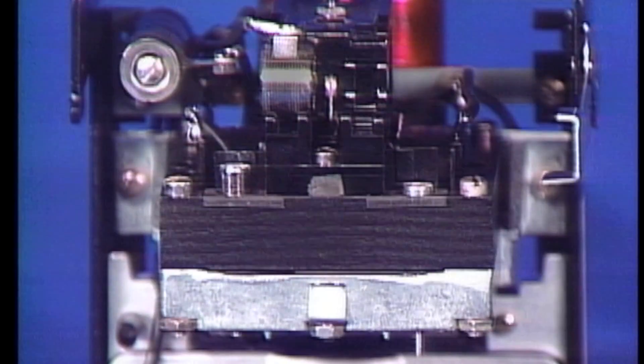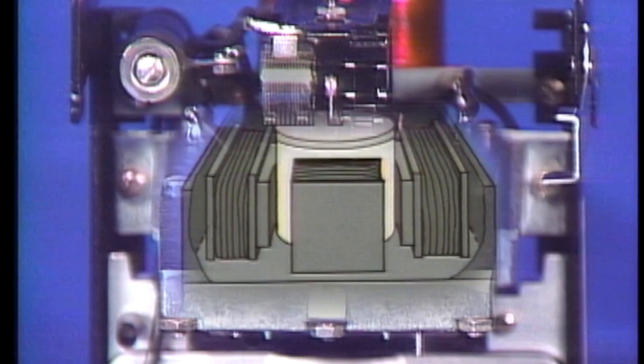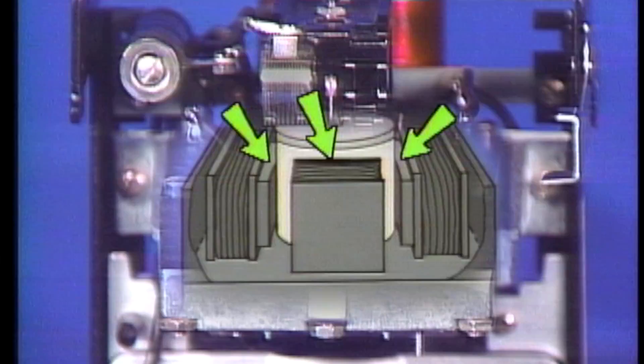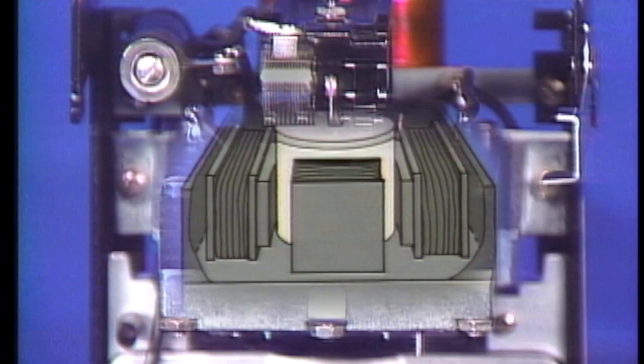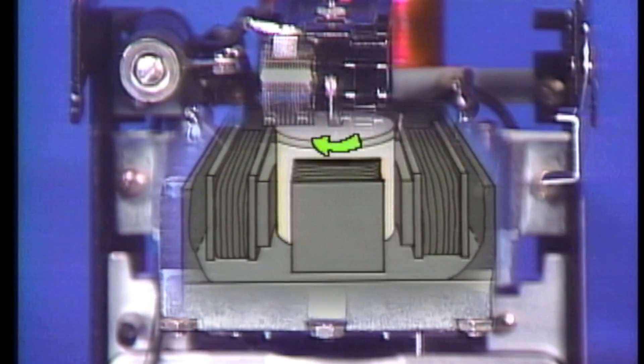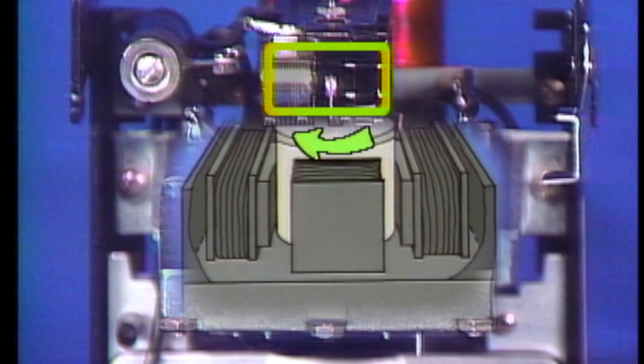Some parts of an induction cup element are difficult to see. Combining the relay element with a simplified illustration helps in describing it. Input to an induction cup element creates magnetic fields at the pole face of several electromagnets. These magnetic fields create a torque on the cup. When the input changes beyond a predetermined value, the torque becomes great enough to rotate the cup and close the contacts.